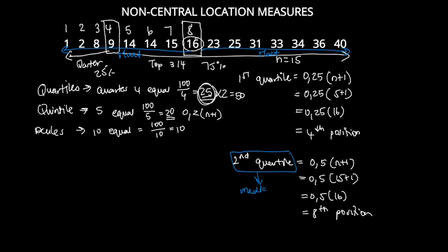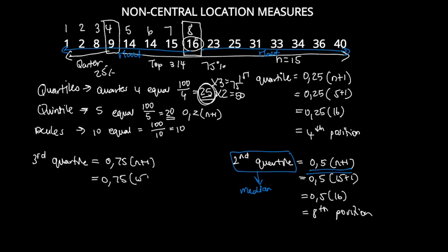The second quartile is also the median of the data set, which is why we use this formula to calculate the median. For the third quartile, we multiply 25 by 3 to get 75, then convert to a decimal by dividing by 100 to get 0.75, multiplied by n plus 1.